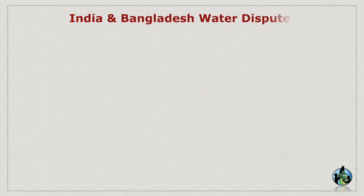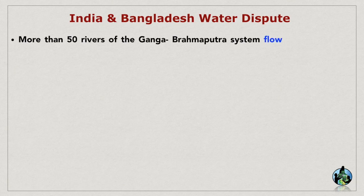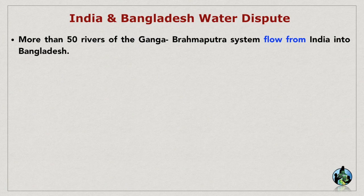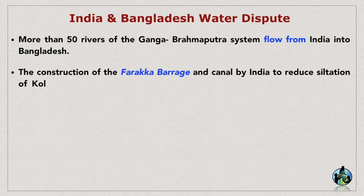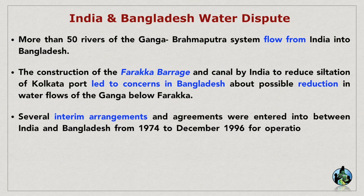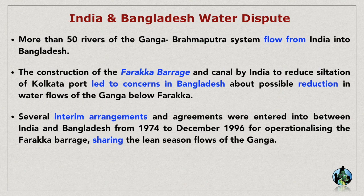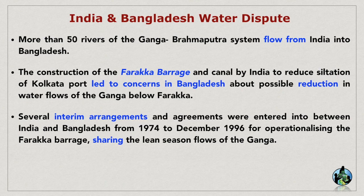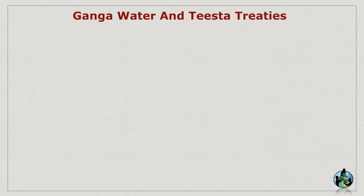India and Bangladesh Water Dispute: More than 50 rivers of the Ganga-Brahmaputra system flow from India into Bangladesh. The construction of the Farakka barrage and canal by India to reduce siltation of Kolkata port led to concerns in Bangladesh about possible reduction in water flows of the Ganga below Farakka. Several interim arrangements and agreements were entered into between India and Bangladesh from 1974 to December 1996 for operationalising the Farakka barrage and sharing the lean season flows of the Ganga.